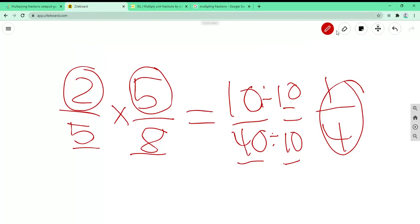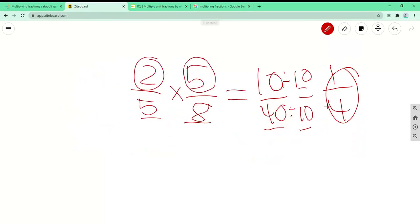1 fourth times 4 fifths. Let's see that again, 4 fifths. Alright. So we know that 1 times 4, if you know multiplication, is 4.